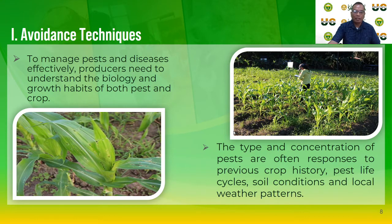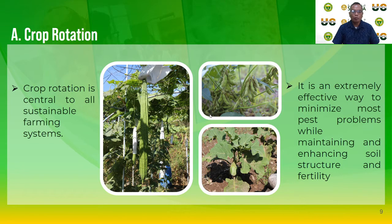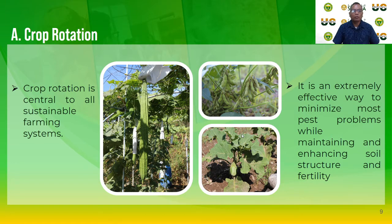One technique in organic farming for pest management is avoidance. The first avoidance strategy is crop rotation, which is central to all sustainable farming systems. It is an extremely effective way to minimize most pest problems while maintaining and enhancing soil structure and fertility. To reduce soil-borne pests and diseases, rotate host crops with non-host crops. Rotation can also break insect pest life cycles and help reduce weeds.